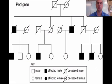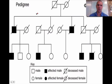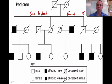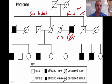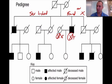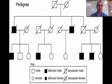This is a pedigree they might give you on the EOC. The first thing that strikes me is who's affected by the disease we're tracking. Only the males are affected — if you ever see that on a test, it means it is sex-linked. It means it's found on the X chromosome. A boy is XY — if he gets a bad X, he expresses the trait. A girl has two X's, so if she gets one bad X she can cover it up, which is called being a carrier.